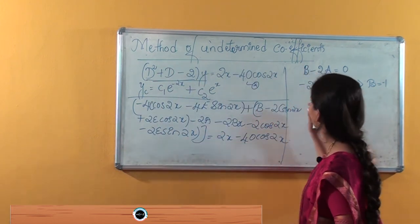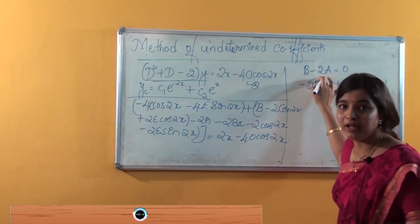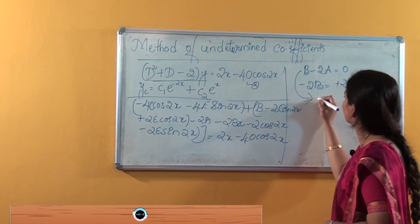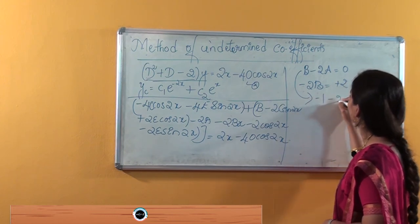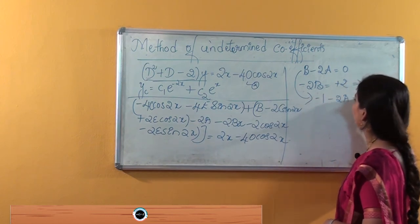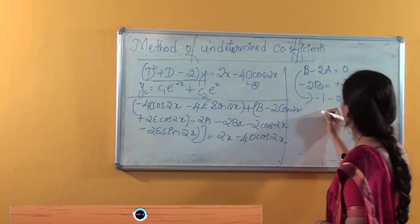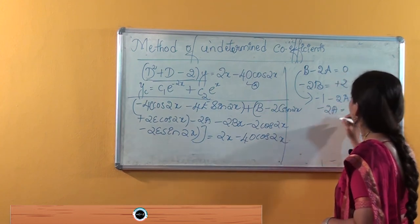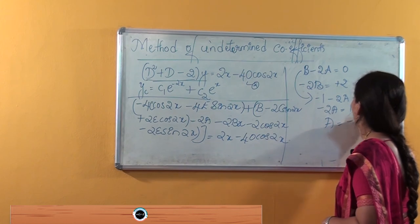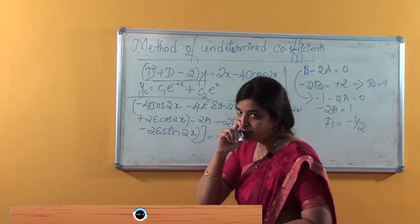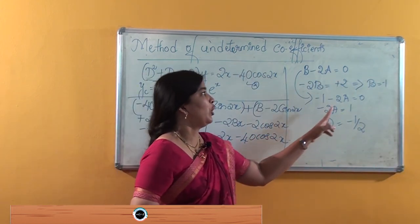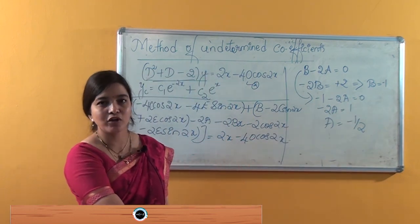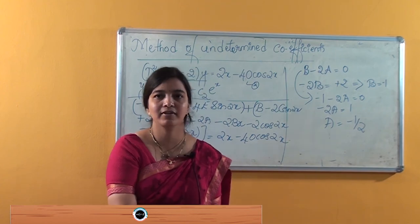Using B equals minus 1 in the equation B minus 2a equals 0, we get minus 1 minus 2a equals 0, so minus 2a equals 1, giving A equals minus one-half. We have now found the values of B and A. We will find the values of the remaining constants c and e in our next class. Thank you.